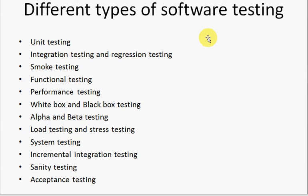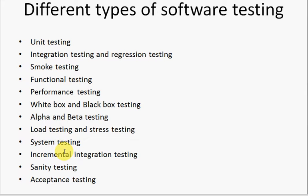The different types of software testing are: unit testing, integration testing, regression testing, smoke testing, functional testing, performance testing, white box and black box testing, alpha and beta testing, load testing, stress testing, system testing, incremental integration testing, sanity testing, and acceptance testing. In future tutorials, we will go over each and every different type of testing in detail.